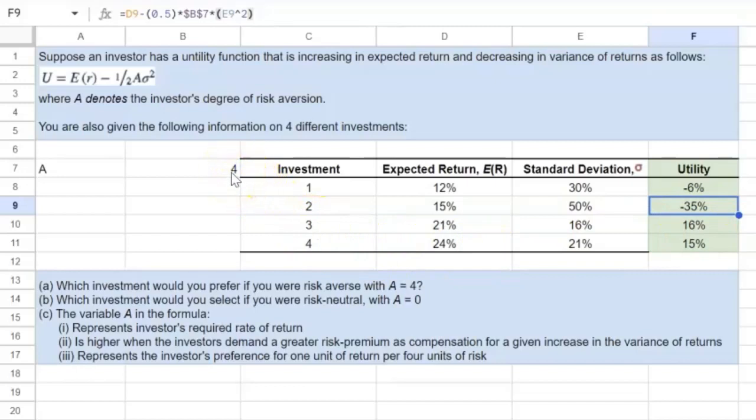Now, if this same number was zero instead, then our investor would actually prefer investment four, because as you can see over there, the utility is the highest. And this shouldn't surprise you,